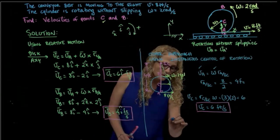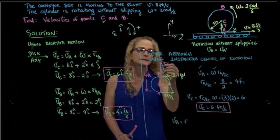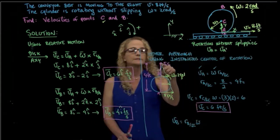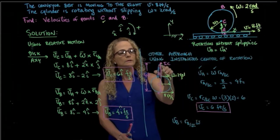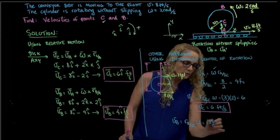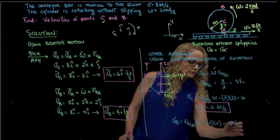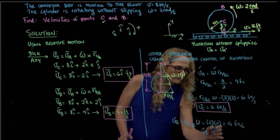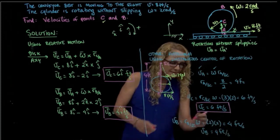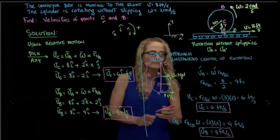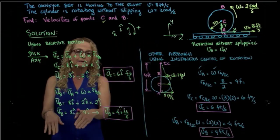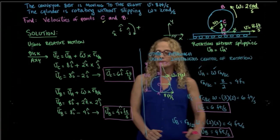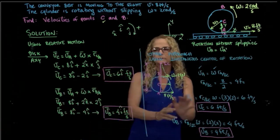Similarly, the velocity of B equals the distance from the instantaneous center of rotation to B times the angular velocity. That distance is 4 minus 2 equals 2 feet, so velocity of B equals 2 times 2, which is 4 feet per second. We get exactly the same results using either the relative coordinate system attached to the disk or the concept of instantaneous center of rotation. The first is a vectorial approach and the second is a scalar approach.